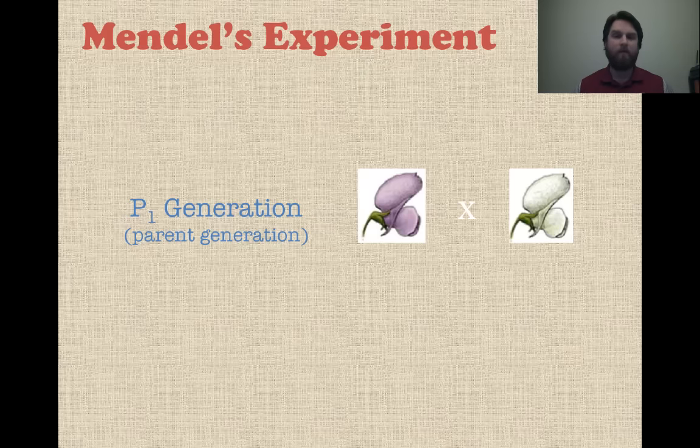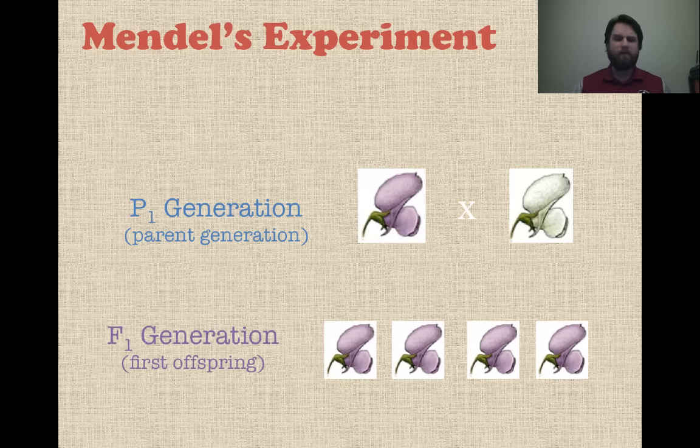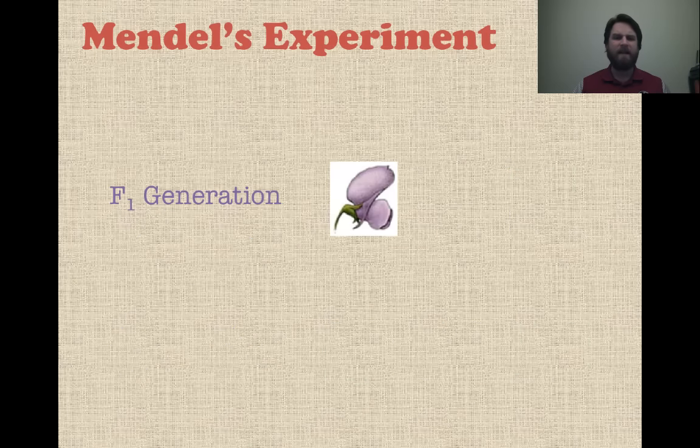He took purple plants, cross-pollinated them with white plants — all pea plants, but we're talking about them in terms of flower color. This was the parent generation, what we call the P1 generation. All of the offspring had purple flowers, every single one of them — that's the F1 generation, the first generation after the parents. This was really interesting, so he asked: what if I take a step further? He crossed two purple plants from the F1 generation, and in the F2 generation he got mostly purple, but every fourth plant had a white flower. That white trait showed up again, but it took a couple of generations.